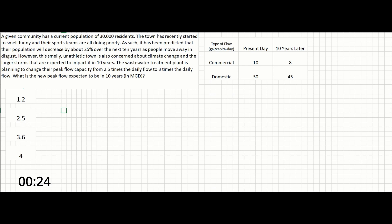However, this smelly, unathletic town is also concerned about climate change and the larger storms that are expected to impact it in 10 years. The wastewater treatment plant is planning to change their peak flow capacity from 2.5 times the daily flow to 3 times the daily flow. What is the new peak flow expected to be in 10 years in MGD?